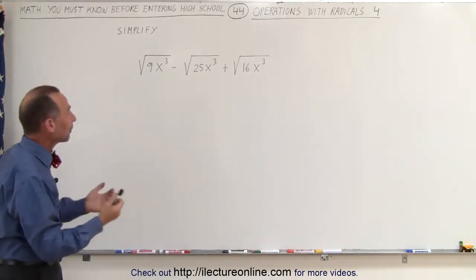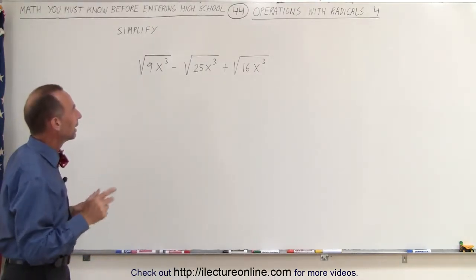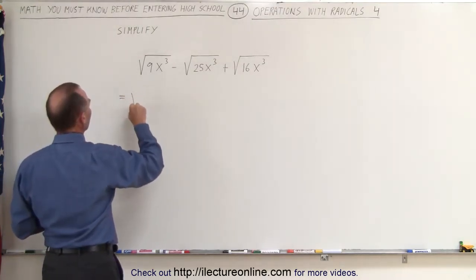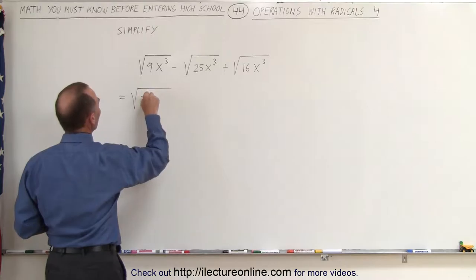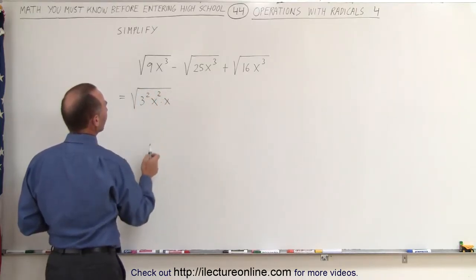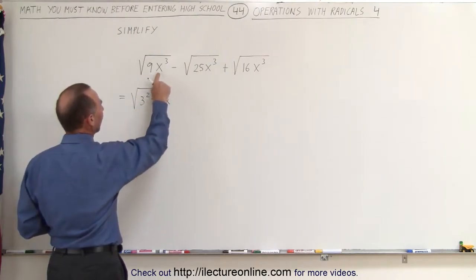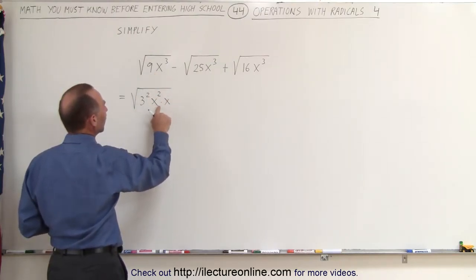So can we simplify it to the point where we can combine the radicals? Let's see here. Let's rewrite it like this first. This can be written as the square root of 3 squared times x squared times x. So what I've done here is I've written 9 as the square of 3, and x cubed is x squared times x.